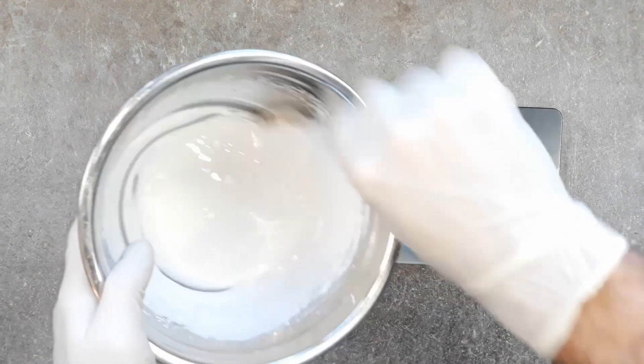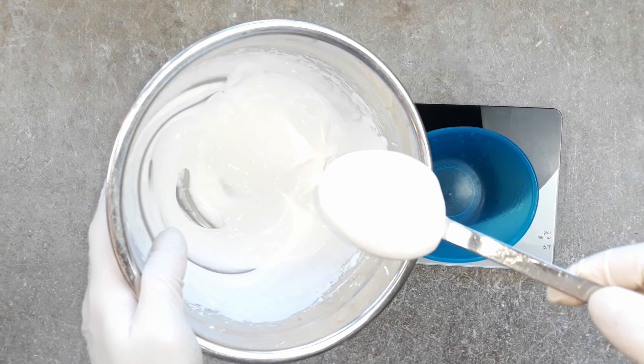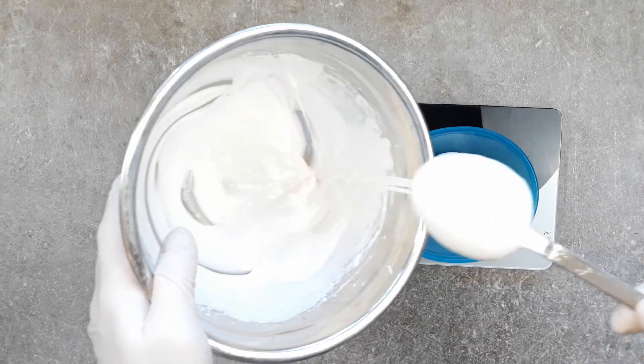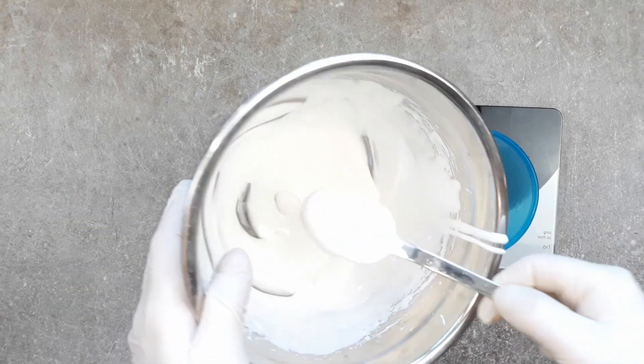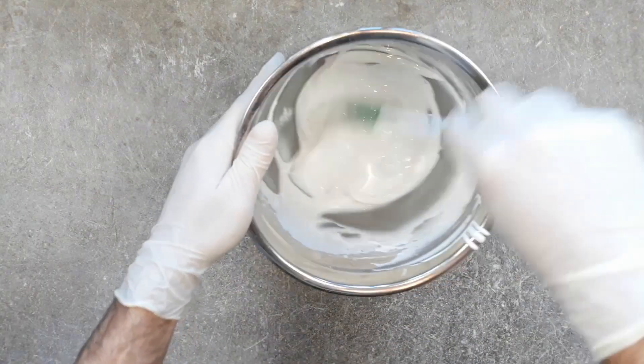And once that's all done, we need to take out around 50 grams of this mix now, because that's going to be our icing for the top of these Zimtsterne. And 50 grams will be about two and a half tablespoons of this. And that'll be enough to ice all of these biscuits we're making here. Plus you'll have a little bit left over extra, just in case you balls your first few up and you need to do them again.